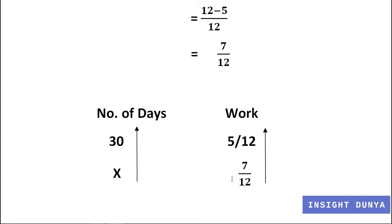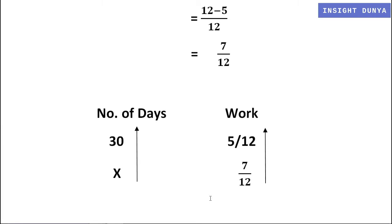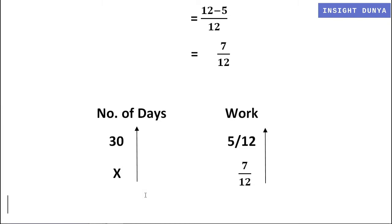In other words, 7 over 12 part of the building is still to be built. After writing 7 over 12 below 5 over 12, I compare the two quantities — the part of work and the number of days. The number of days and work are directly proportional to each other, because if work increases, the same workers will take more days to complete it. Therefore I draw arrow lines in the same direction.